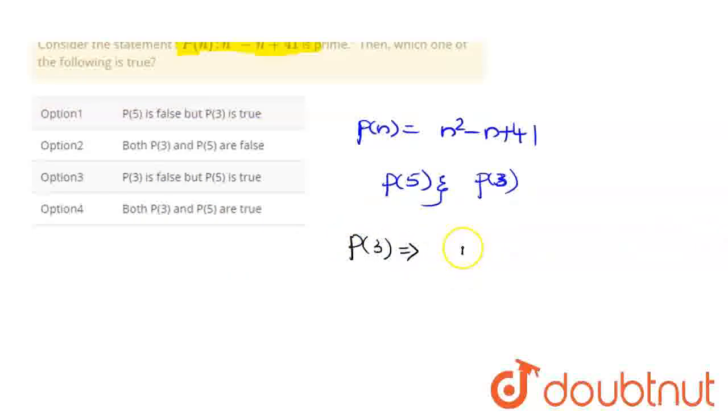p(3) equals 3² - 3 + 41. You can see, 9 - 3 + 41, that is 50 - 3, which equals 47. We can see 47 is a prime number.